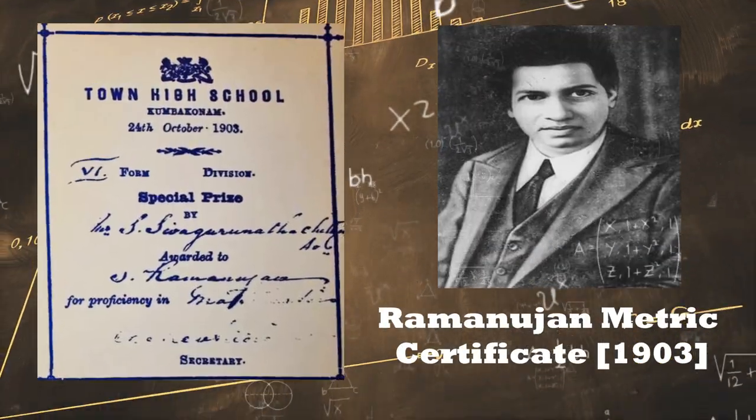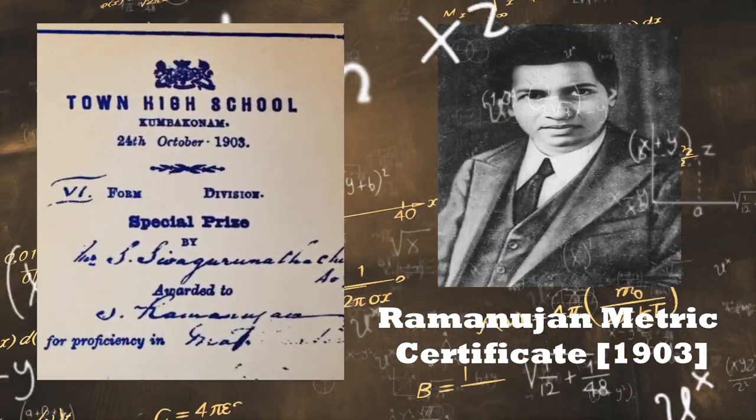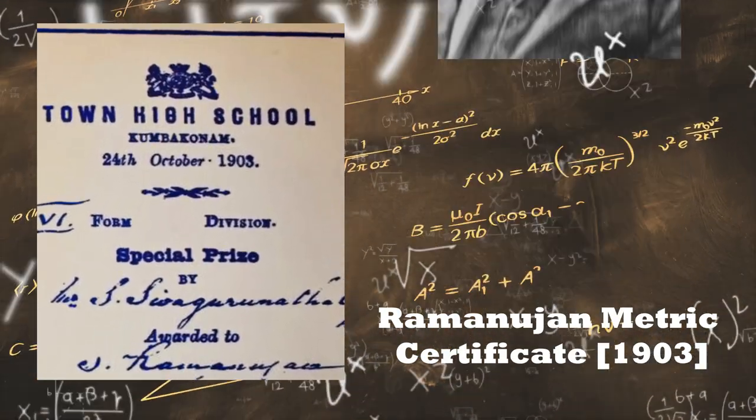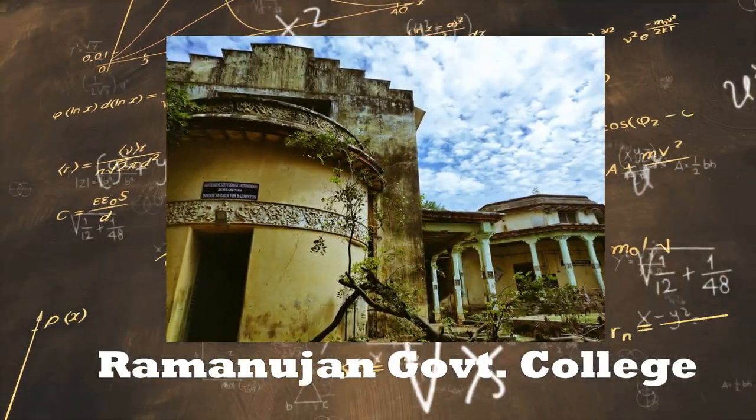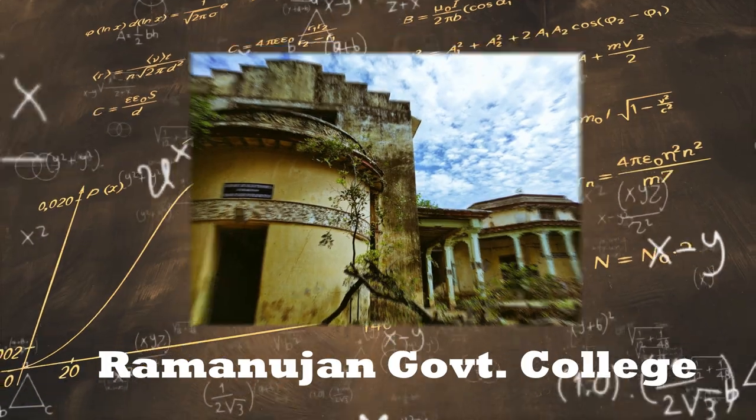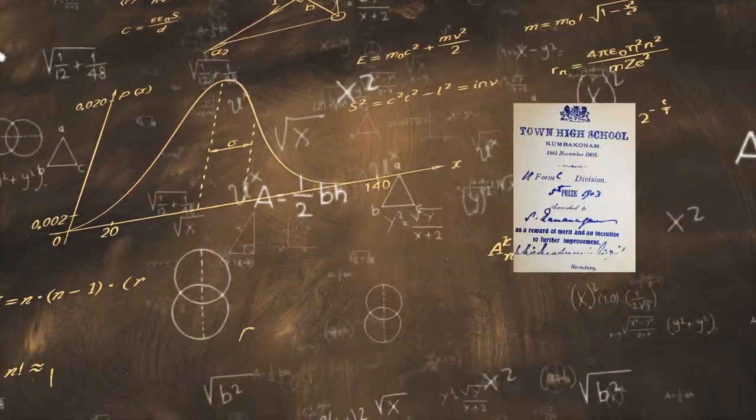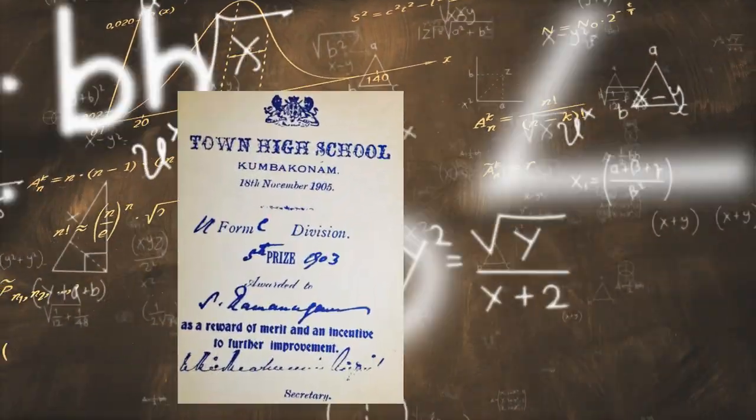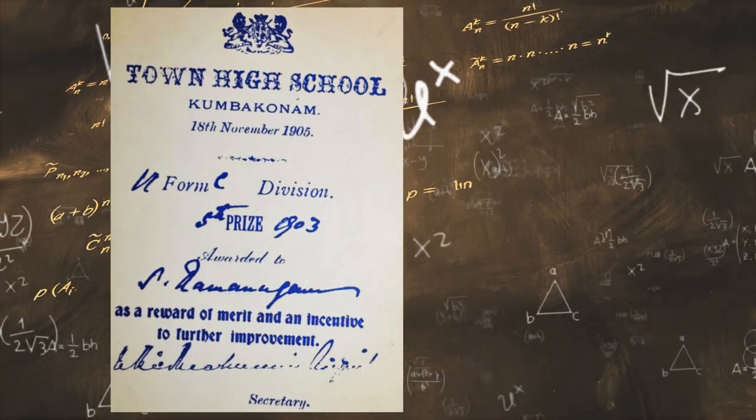In 1903, Ramanujan passed the matriculation examination of University of Madras and joined the Government College of Kumbakonam in 1904 with the Subramanyam scholarship, which was usually awarded to students for proficiency in mathematics and English.